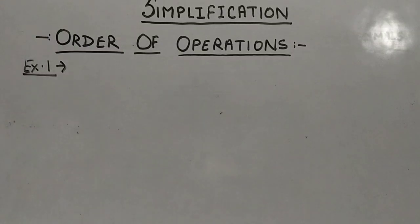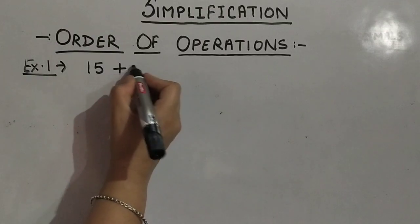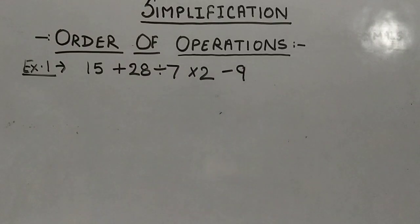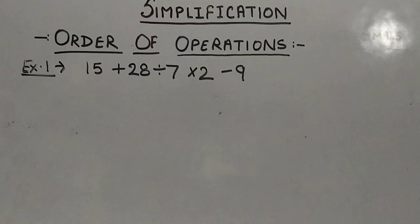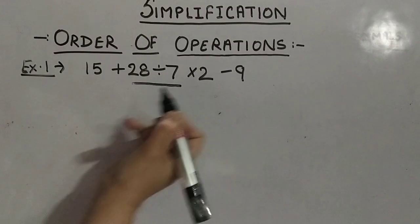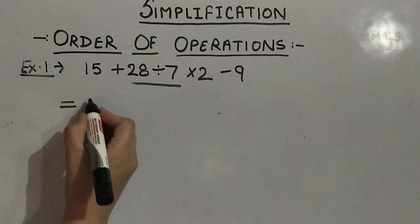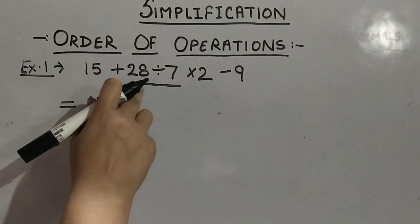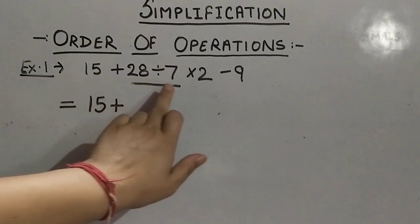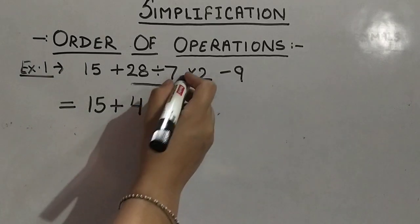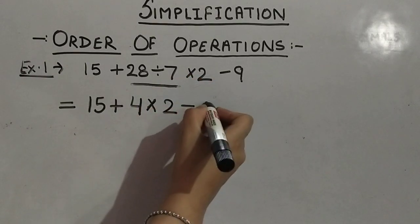Let us understand this order with some examples. Example 1: 15 + 28 ÷ 7 × 2 − 9. In this question there are no brackets, and 'of' is also not present. The third step, D for division, is present here. So we underline the division operation: 28 ÷ 7 = 4. The rest of the numbers remain as they are: 15 + 4 × 2 − 9.